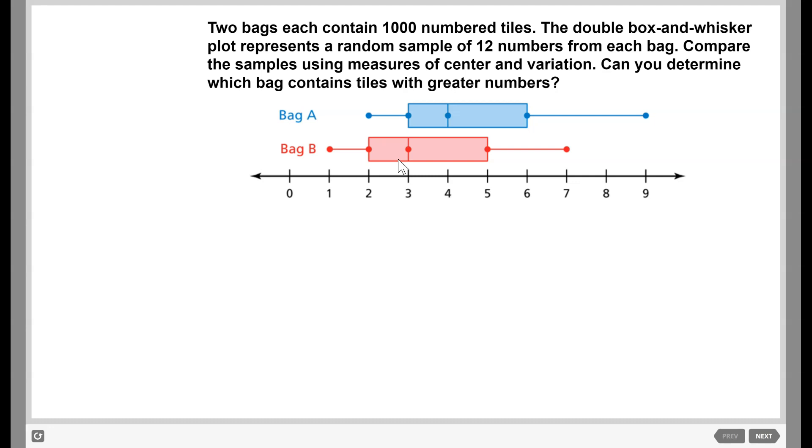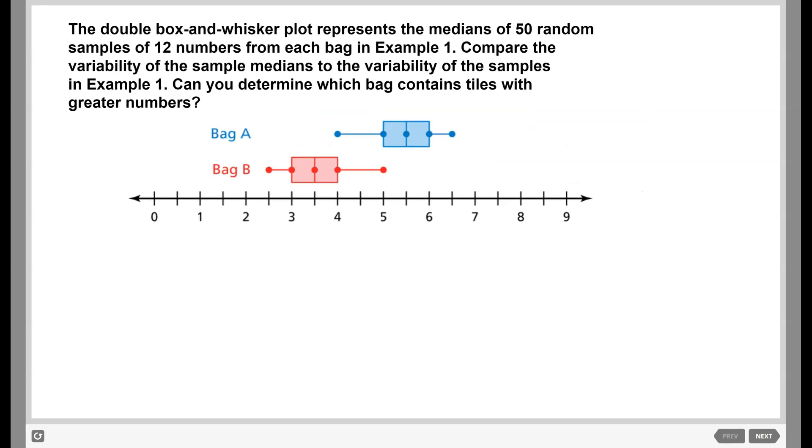Let's look at a different example now. This double box and whisker plot represents the medians of 50 random samples of 12 numbers from each bag from the last example that we did. So this time, you did 50 random samples of 12 numbers, and you found the median of those each time. So this represents a lot more data this time. We're going to compare our variability of the sample medians to the variability of the samples in example 1.